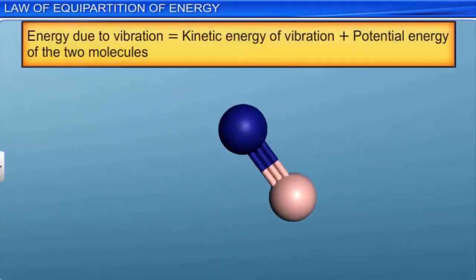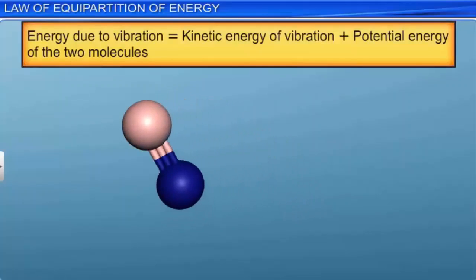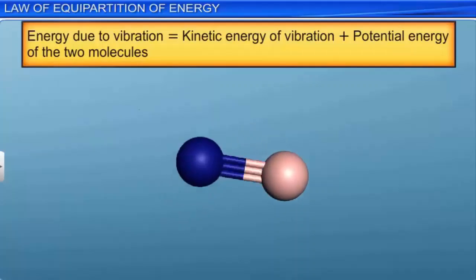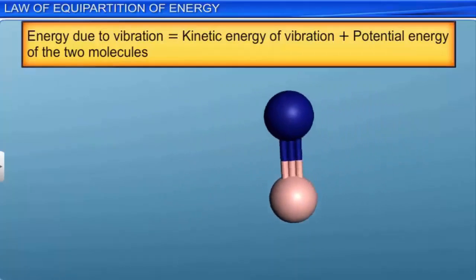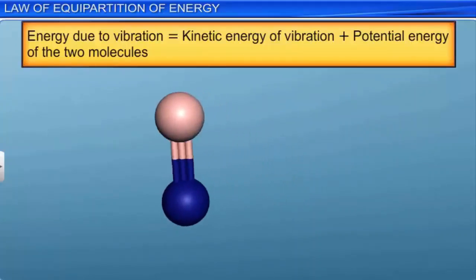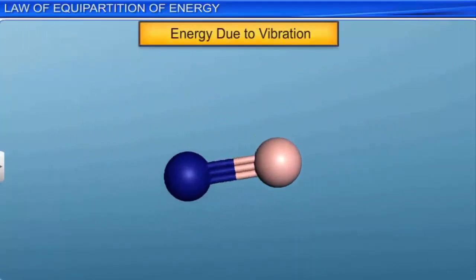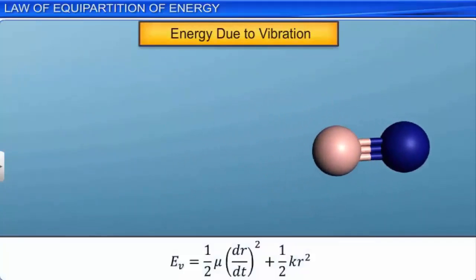The vibration energy of the molecule involves kinetic energy of vibration and potential energy due to the compression or elongation of the two atoms. The energy due to vibration, eV, is equal to (1/2)μ(dr/dt)² + (1/2)kr², where μ is the mass of the molecule, k is the force constant, and dr/dt is the velocity of the atoms along the length of the molecule.